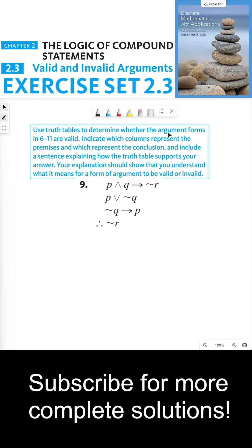Use truth tables to determine whether the argument forms in 6 through 11 are valid. Indicate which columns represent the premises and which represent the conclusion, and include a sentence explaining how the truth table supports your answer. Your explanation should show that you understand what it means for a form of argument to be valid or invalid.